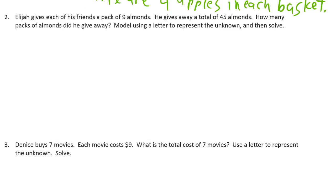Elijah gives each of his friends a pack of 9 almonds. He gives away a total of 45 almonds. How many packs of almonds did he give away? Model using a letter to represent the unknown, and solve.